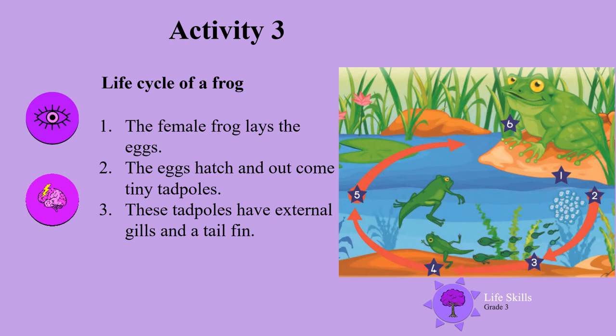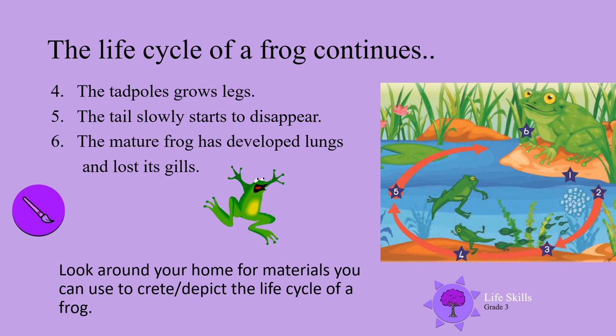These tadpoles have external gills and a tail fin. Number 4 shows the tadpoles with their legs growing. Number 5, the tail slowly starts to disappear. And then we have number 6, the mature frog that has developed lungs and lost its gills. Now boys and girls, let's see if you can look around your home and find odd different things to make your own life cycle of a frog.